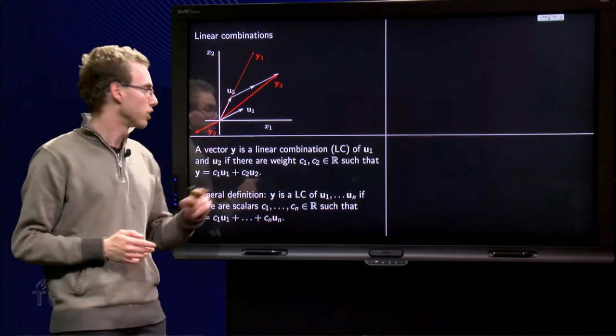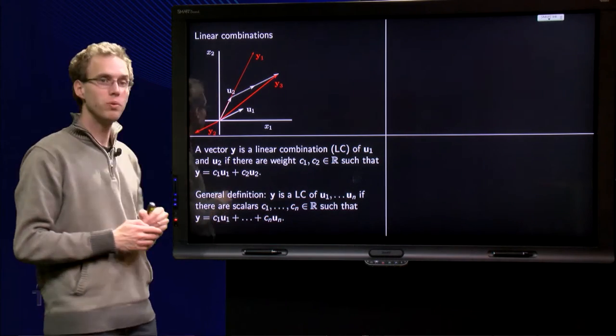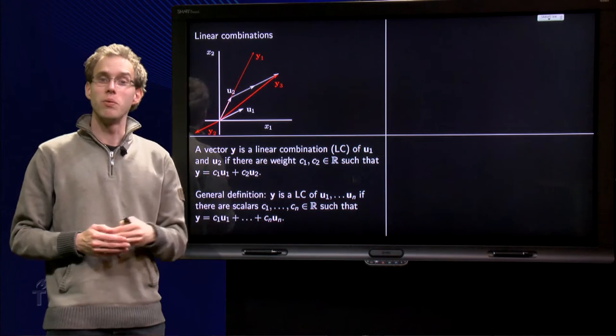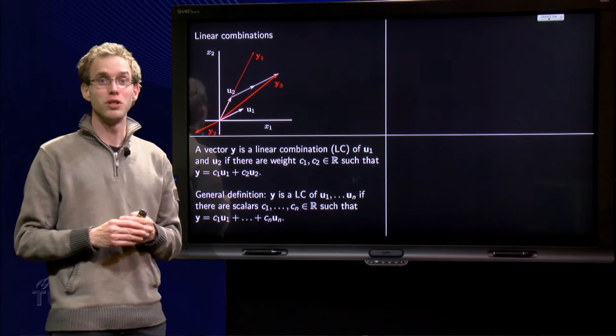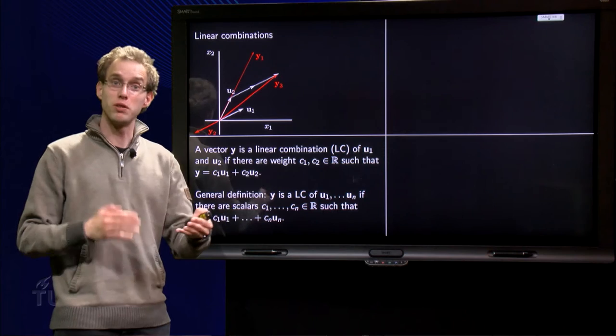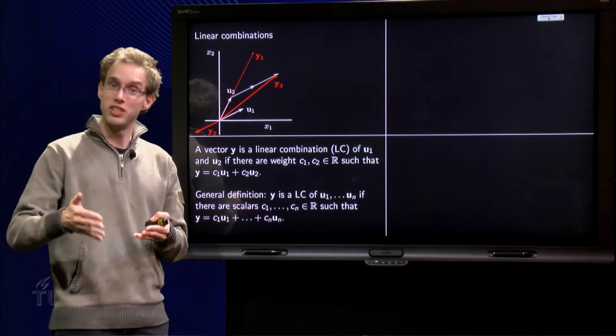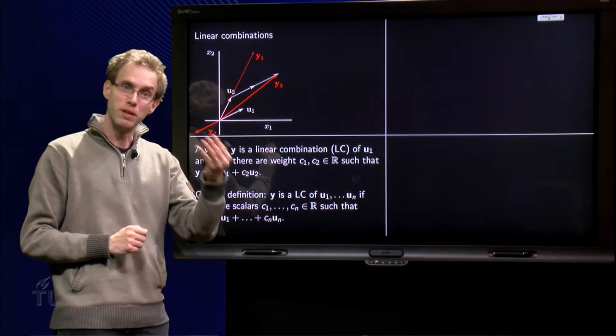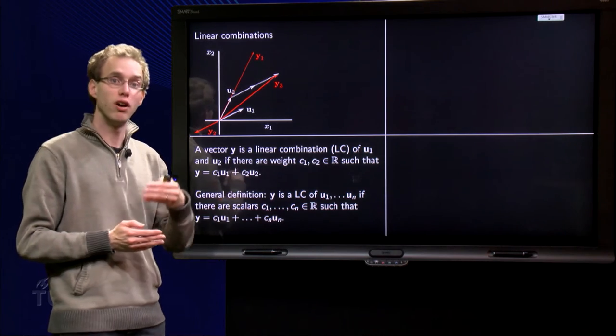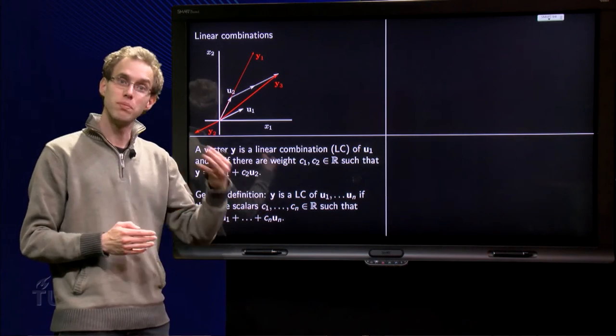In this particular case, for example, if you look at y2, we see y2 equals minus 1 times u1, so in this case we have y2 equals minus 1 times u1 plus 0 times u2. So that means that y is a linear combination of u1 and u2 with weights minus 1 and 0.